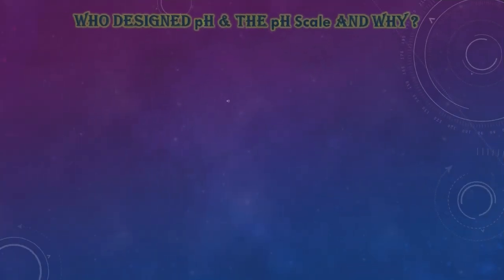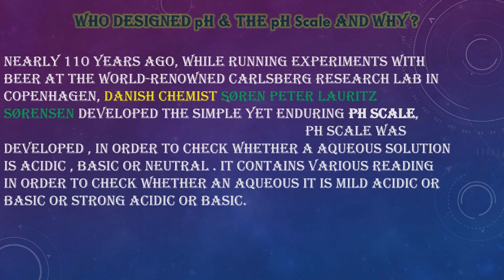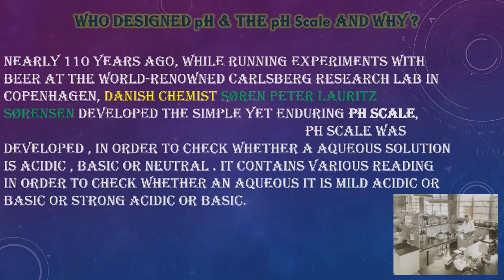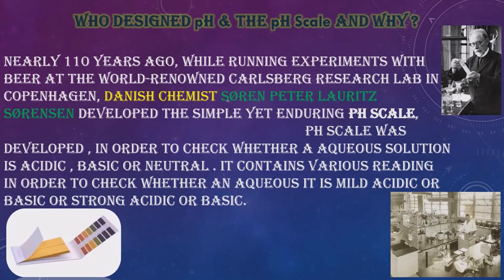Who designed pH and the pH scale and why? Nearly 110 years ago, while running experiments at the Carlsberg Research Lab in Copenhagen, Danish chemist Søren Peter Lauritz Sørensen developed the simple yet enduring pH scale. The pH scale was developed in order to check whether an aqueous solution is acidic, basic, or neutral. It contains various readings to check whether a solution is mildly acidic or basic, or strongly acidic or basic.